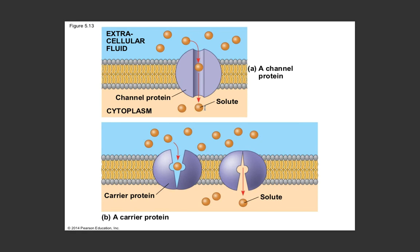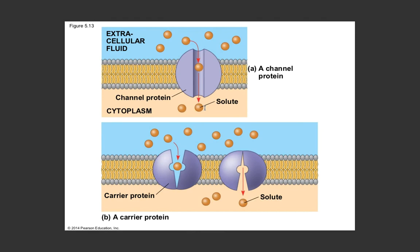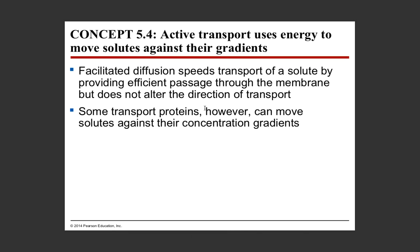Here we have a channel protein allowing molecules to move through the cell membrane through a walkway from high to low concentration. In the bottom image, we have a carrier protein - unlike a channel protein, this one literally has to change shape. The carrier protein undergoes shape changes to open from one side of the membrane to the other to transport substances across. What causes the shape change is when the solute binds to the receptor itself. Most carrier proteins require energy input, though a few do not.